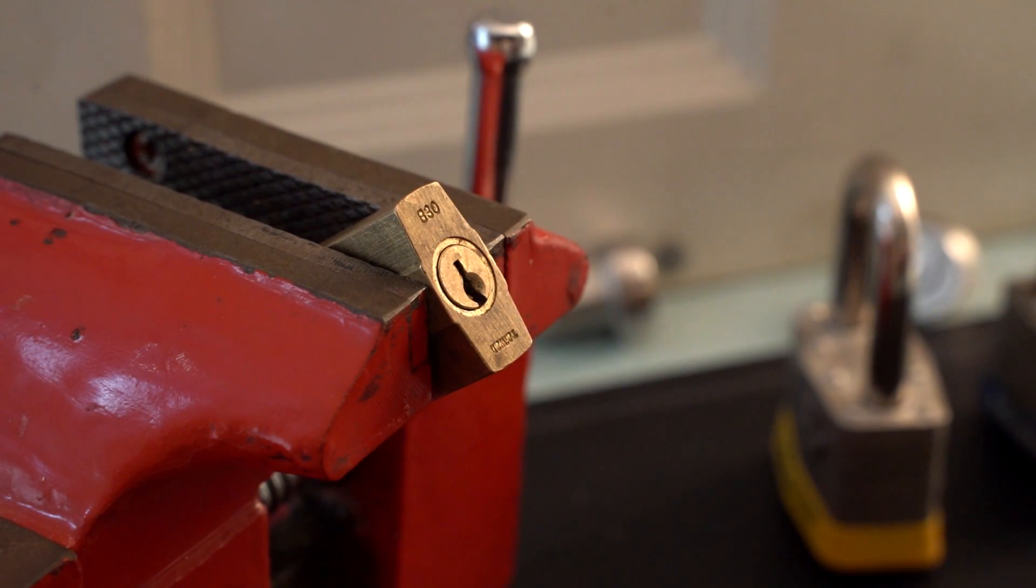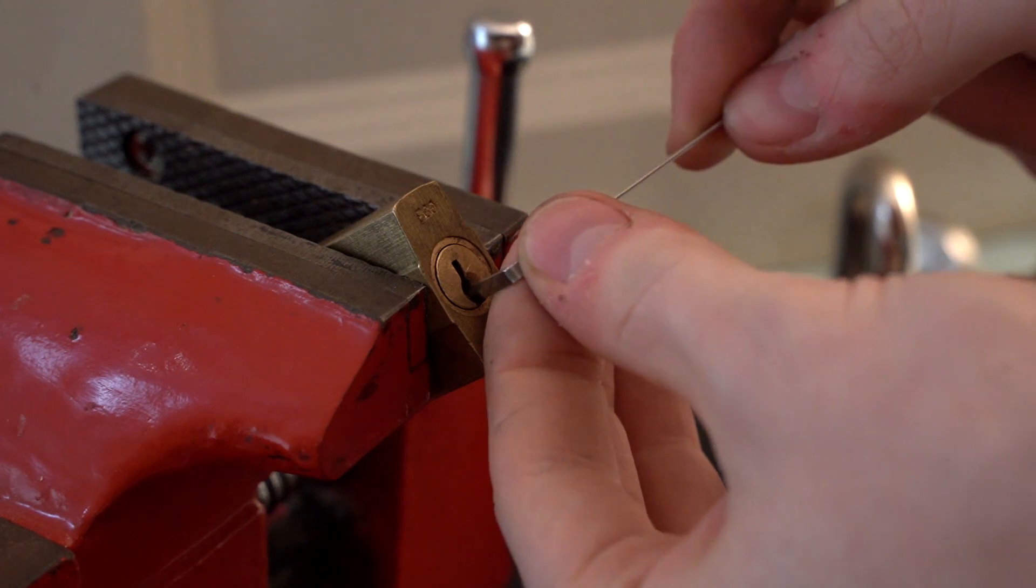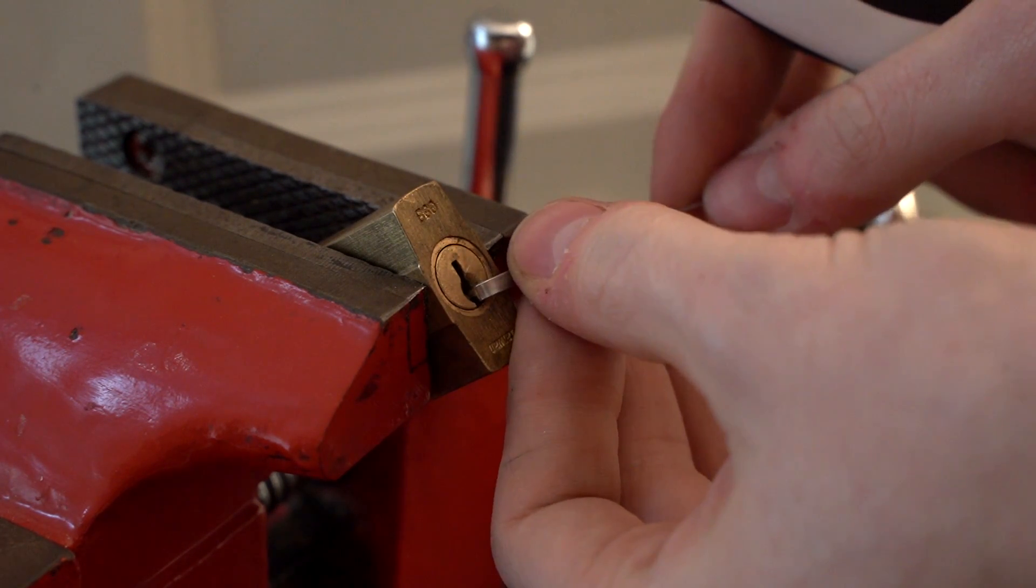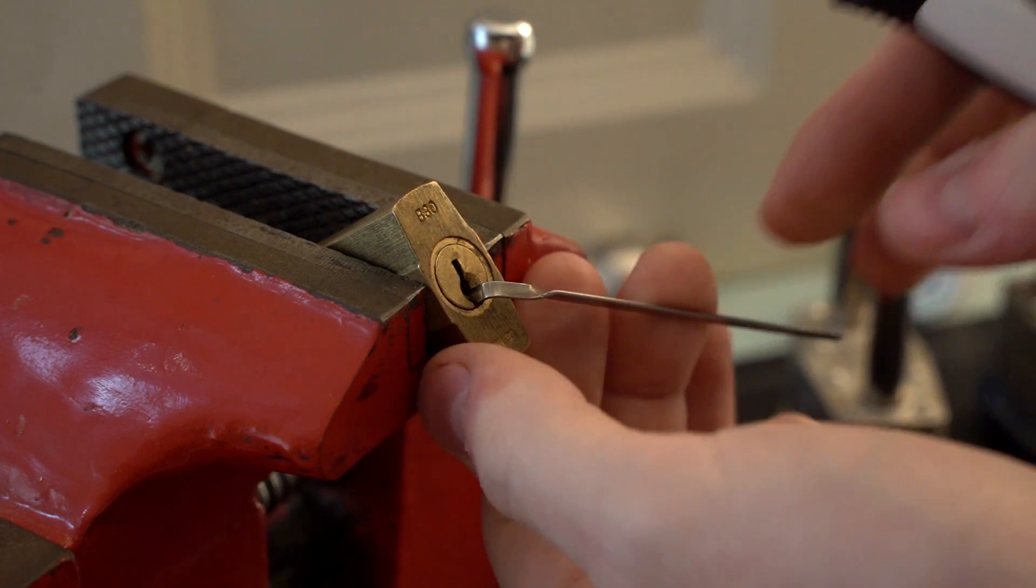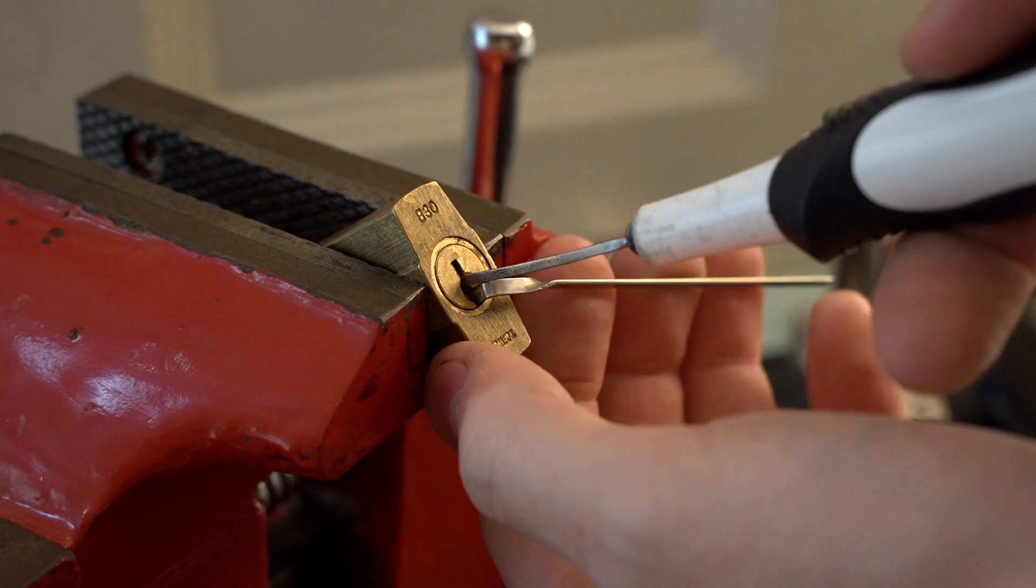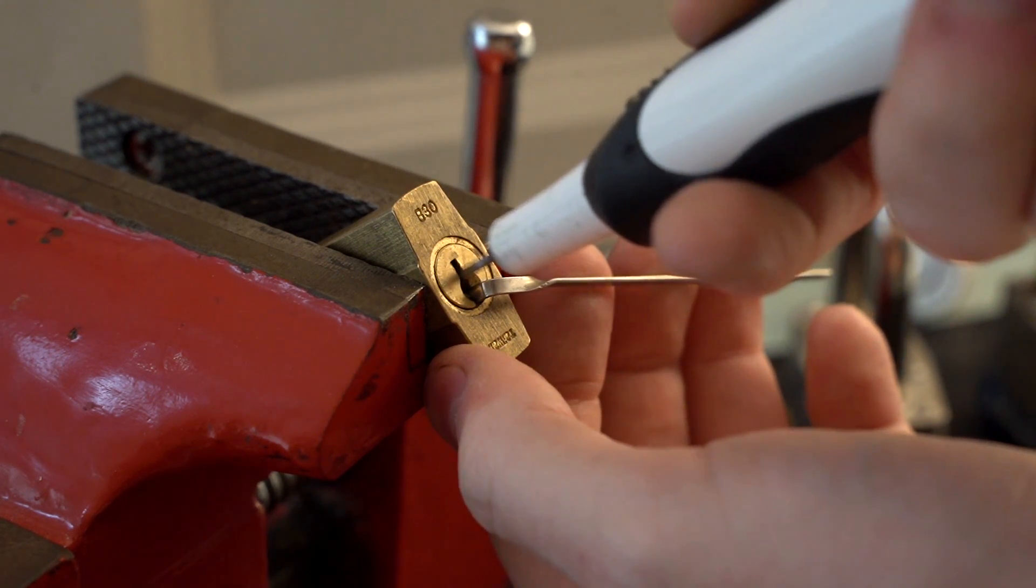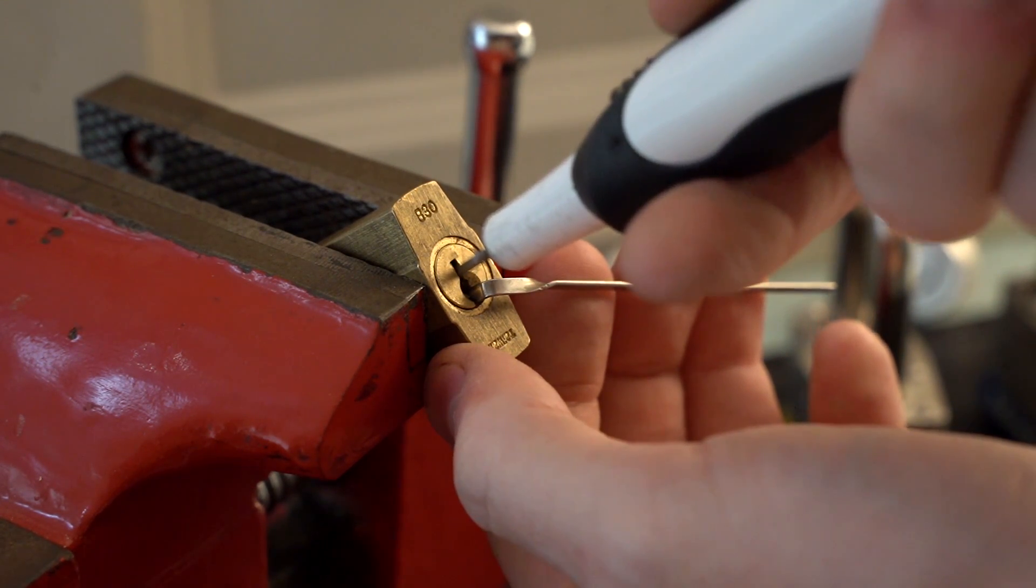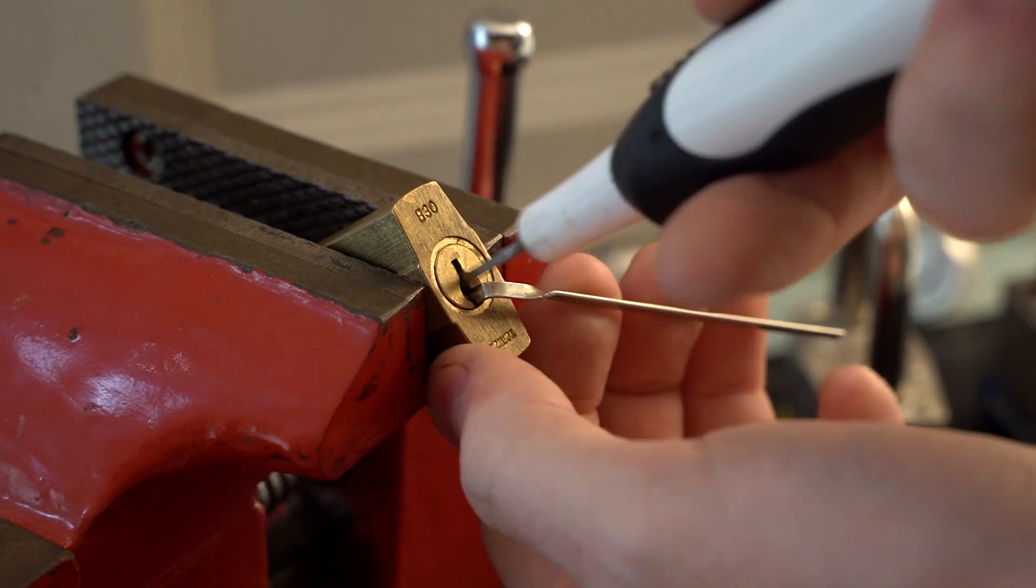A small amount of turning pressure is applied with a tension tool in the direction the lock opens. This pressure is minimal and different locks will require different amounts of force. Insert the pick tip of the electric lock pick into a lock. Try to keep the pick tip level so it makes contact with all of the pins.